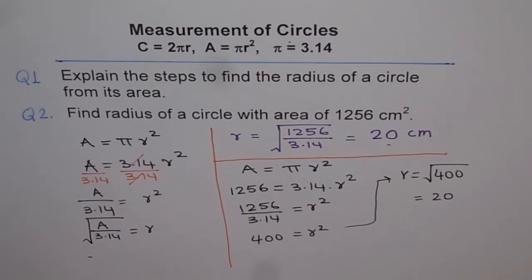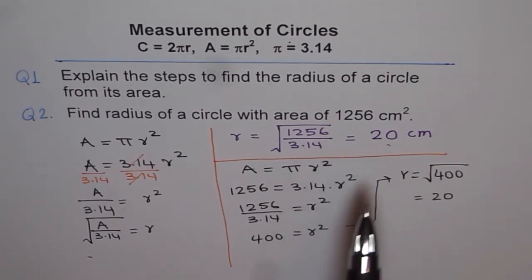I hope you understand the steps. The steps are divide area by 3.14 and then square root it. That's the process.